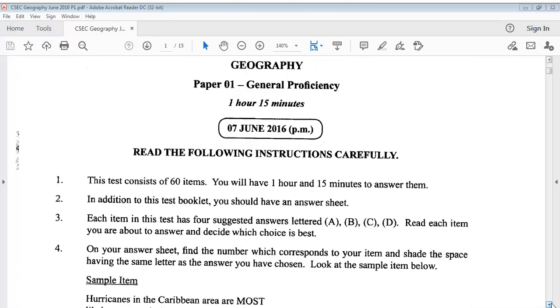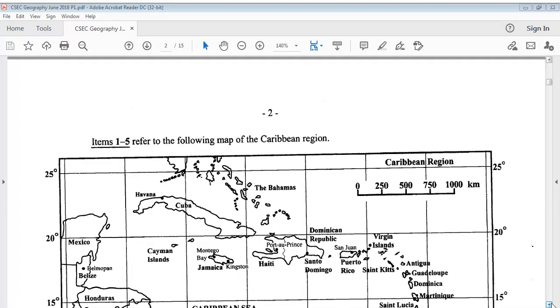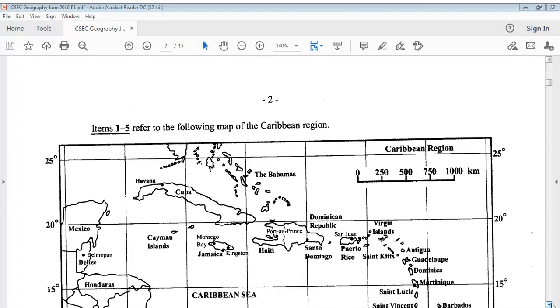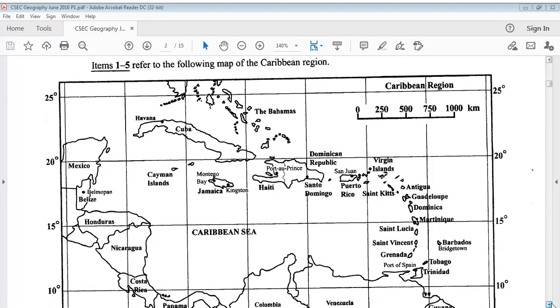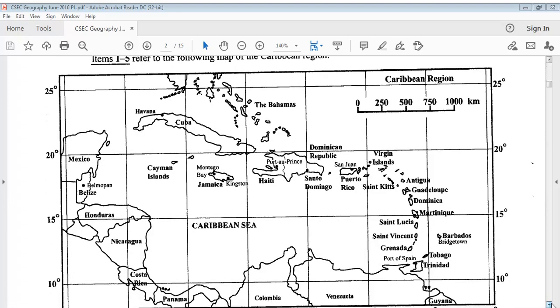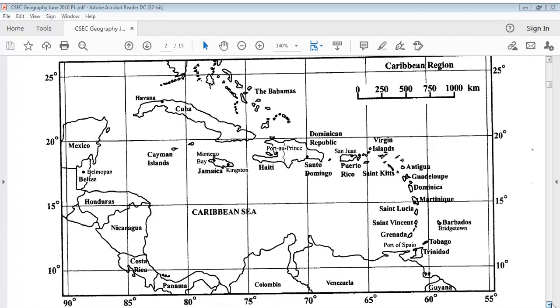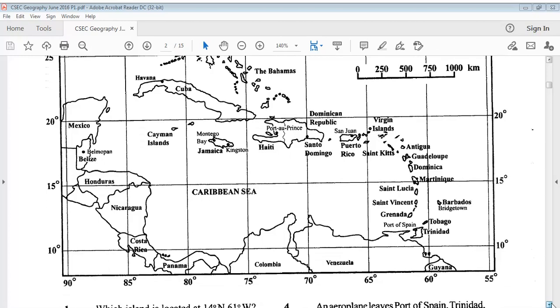The answers will be provided. You can take a look at the questions. Items 1 to 5 refer to the following map of the Caribbean region. So there you have your map.